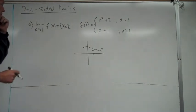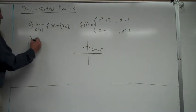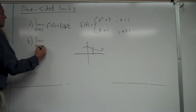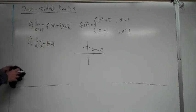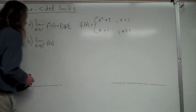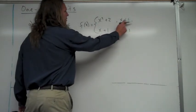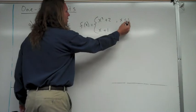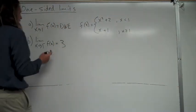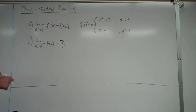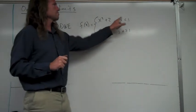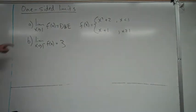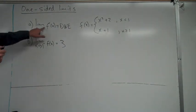The limit just doesn't exist in that case. The left-hand limit would still be 3 on its own, and the right-hand limit would be 2 on its own. Hopefully that's clear: from the left side means values smaller than the number; from the right side means values larger than the number. If x approaches just a number without specifying left or right, you have to check both sides.